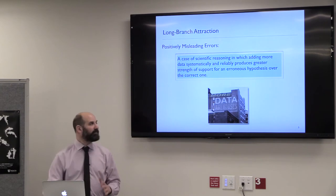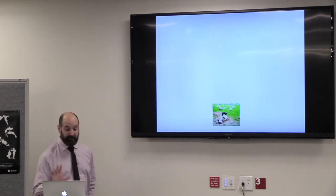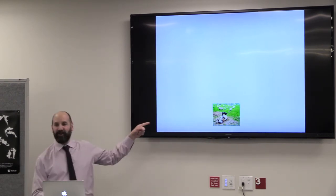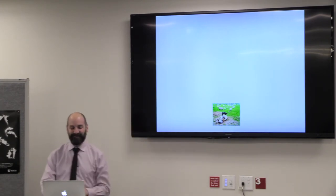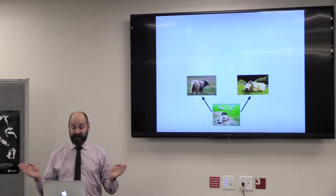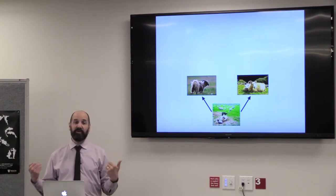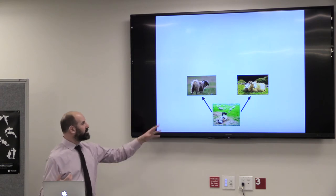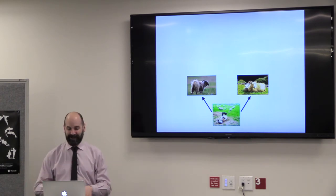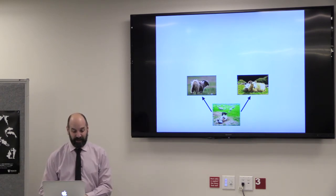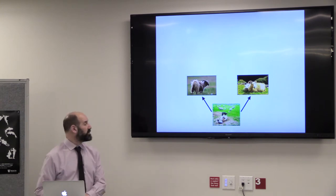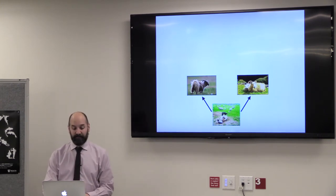Let me start with long branch attraction as a cartoon example. Suppose you have a population of wild sheep living in a valley between two mountains. Suppose this population splits — it diverges, as an evolutionary biologist might say — and forms two new species. Both still live in the valley. They resemble the ancestral population. Let's also say the old species went extinct to simplify the example.